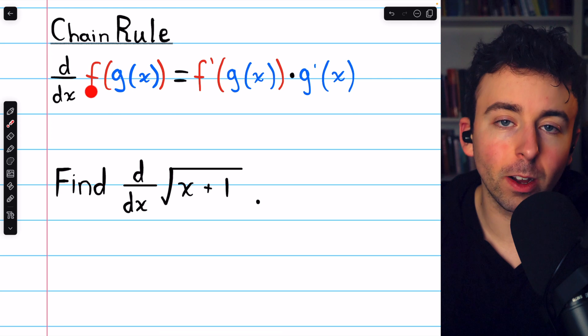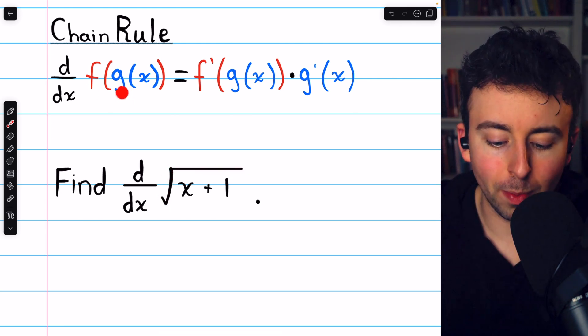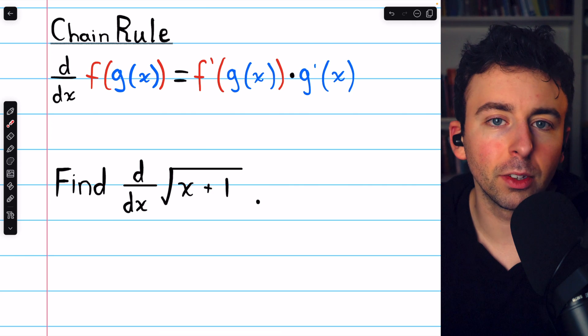The outside function, which we might call f, is the square root function, and the inside function, which we might call g, is this x plus 1.